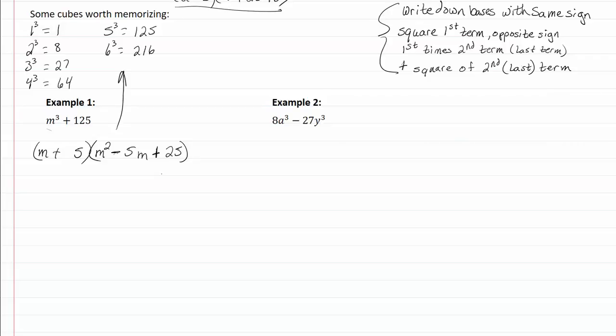Now let's take a look at example two. Again, what tells me this is a cubic is the fact that I have threes for my exponent. So looking back over here at our list, we see that the base for eight is going to be two and the base of a cubed is going to be a. I bring down the sign, I want to keep the same sign, and the base of twenty-seven is three and y will be our base for y cubed.